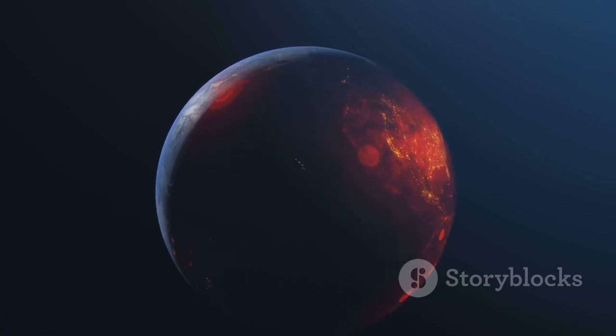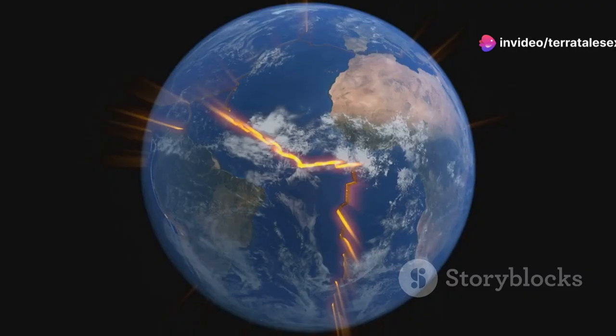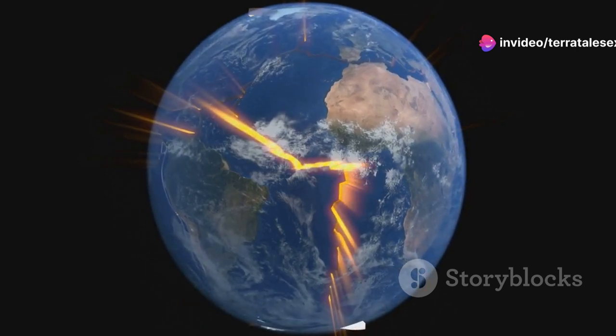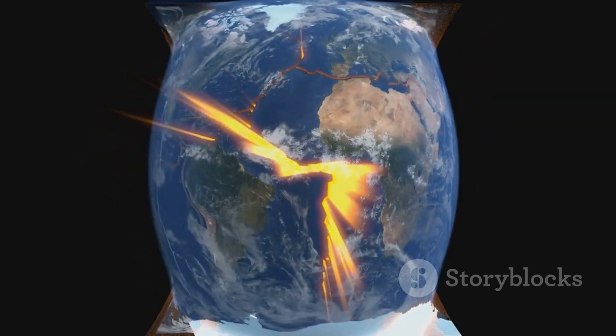The interior of the planet started to transform, with molten material moving and shifting under the immense pressure. Heavier elements like iron and nickel began to sink towards the center due to their density, while lighter elements such as silicon and oxygen rose to the surface. This movement of elements was crucial in defining the internal structure of the planet.